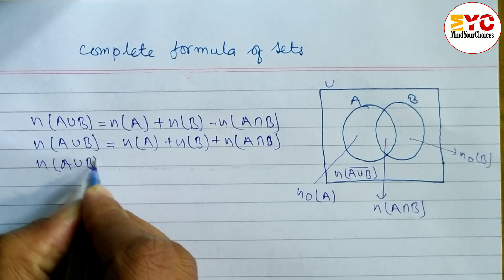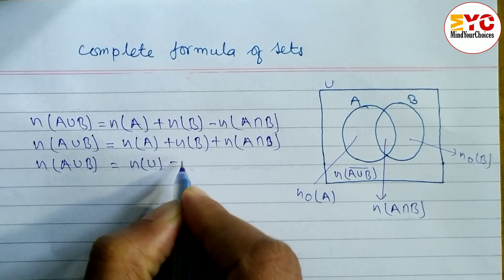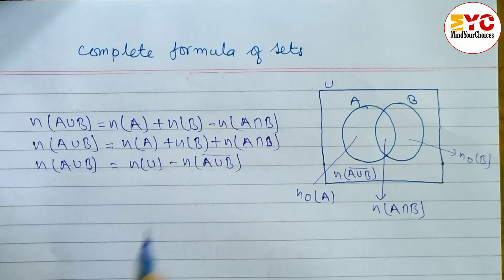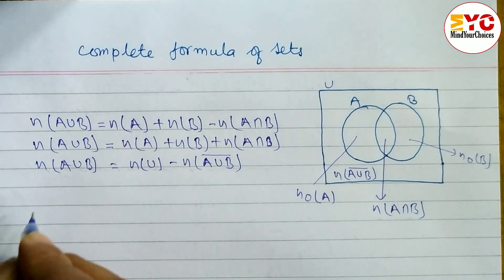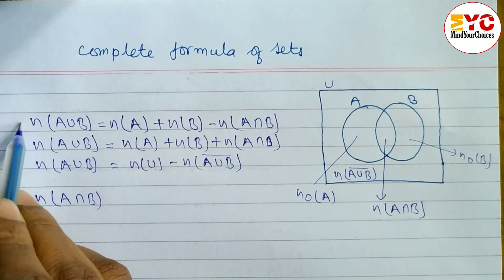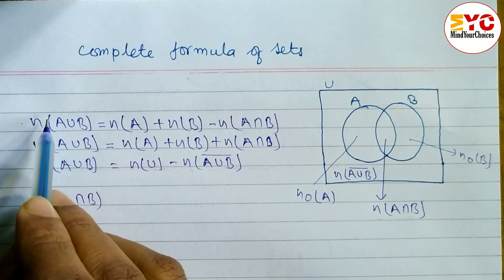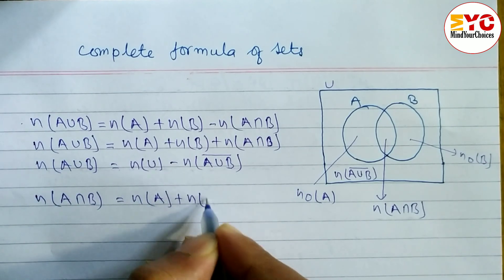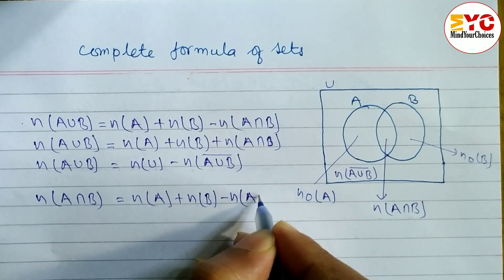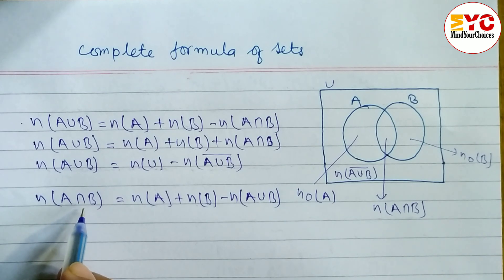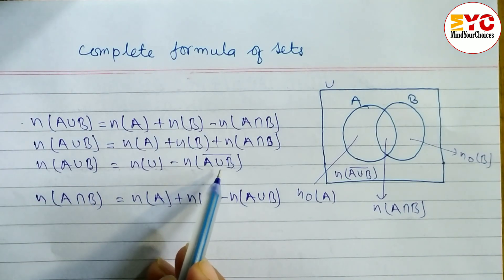Another formula of n(A union B) is n(U) minus n(A union B) complement. According to the condition and given information, we have to use the appropriate formula. After that, for the n(A intersection B) formula, we take the intersection to one side and union to the back side, so we get: n(A intersection B) = n(A) + n(B) minus n(A union B).